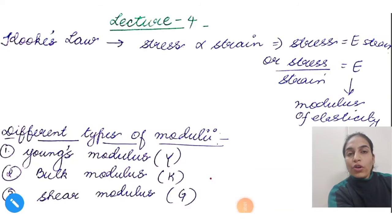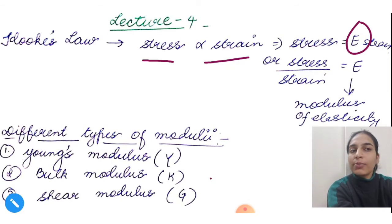Okay, so this is Lecture 4 on properties of solids. Last class we studied the relation between stress and strain, and we also drew the stress-strain curve. Last class I taught you Hooke's law. Hooke's law states stress is directly proportional to strain, and when we removed the proportionality sign, we got a constant E, which we called the modulus of elasticity.